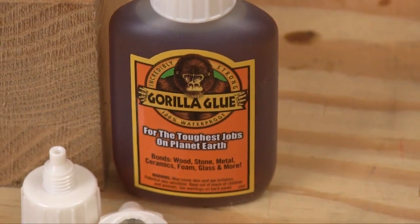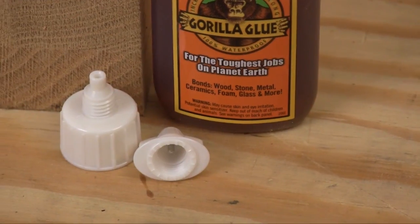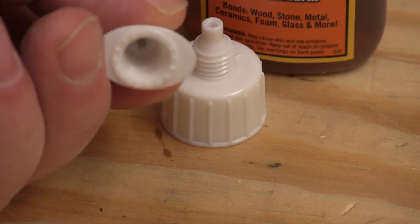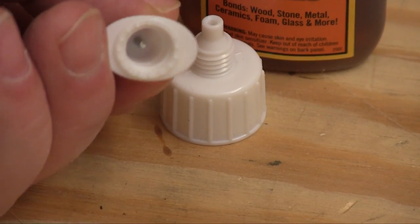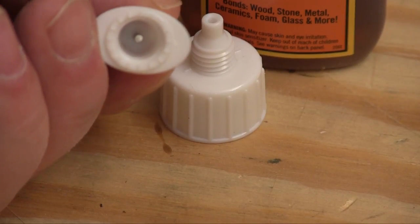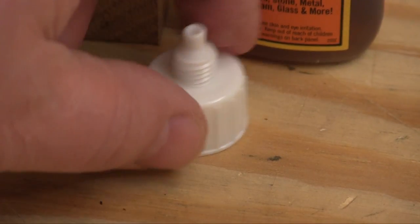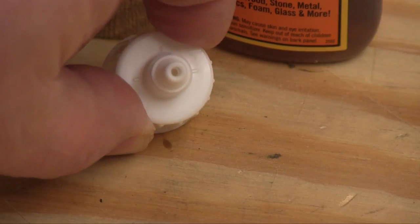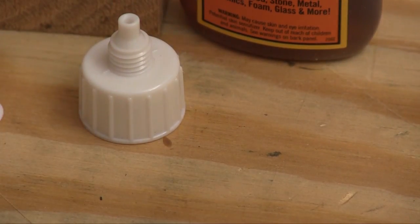Probably the biggest knock against any of the polyurethane glues was them setting up in the bottle. To fix that, Gorilla Glue came up with this new cap that has a stainless steel pin that creates an airtight seal. If you screw that cap back onto the bottle snugly, you get an airtight seal every time.